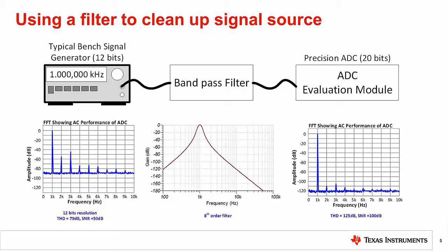Normally, a high order filter is used to maximize the attenuation of noise and harmonics. Using this method, it is possible to generate an input signal sufficient for testing an 18 to 20-bit converter using a common signal generator.